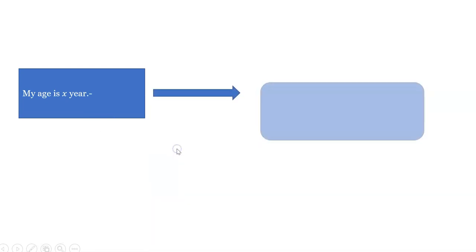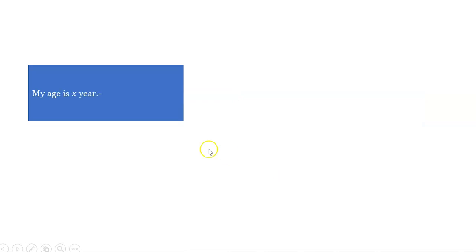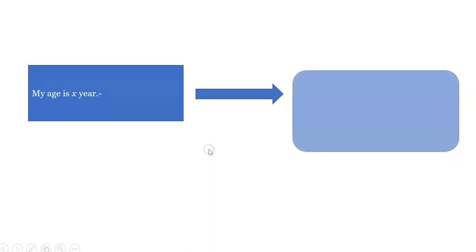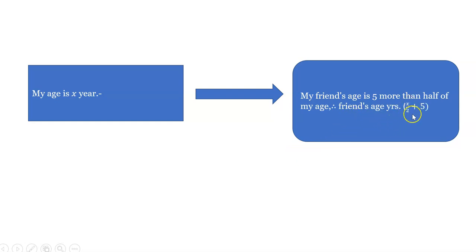My age is x years and my sister's age is 4 less than my age. Therefore, sister's age is x minus 4. Next condition: my friend's age is 5 more than half of my age, and therefore friend's age is x upon 2 plus 5.